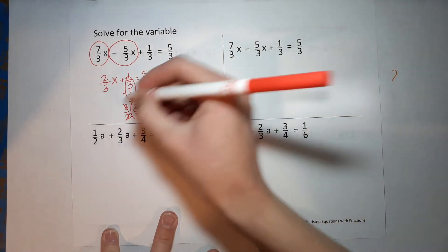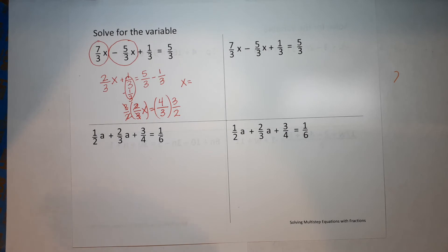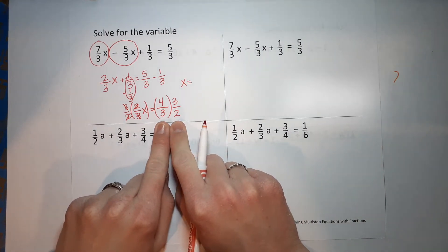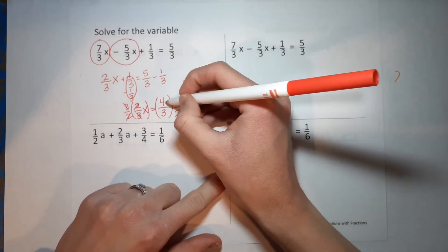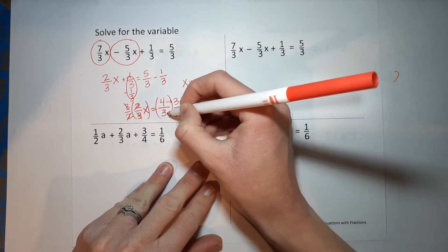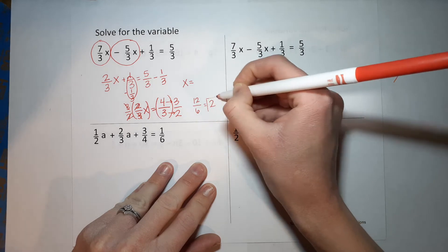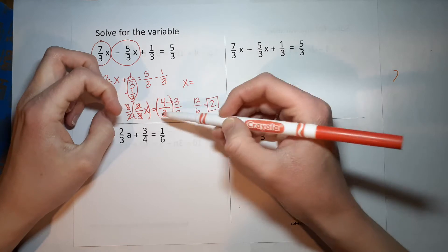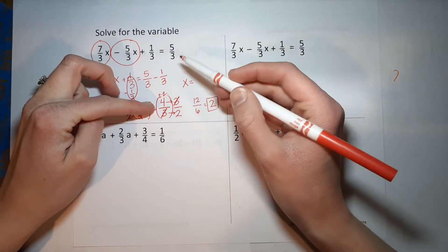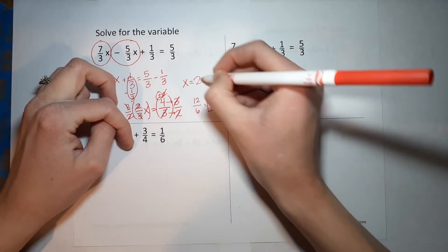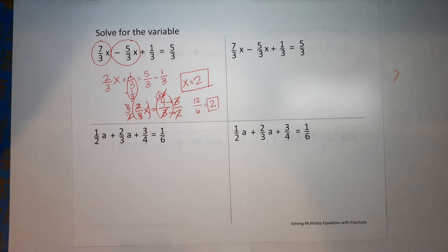I can't forget I have to multiply this side by 3/2 as well — whatever I multiply one side by, I have to multiply the other side by. So x equals 4/3 times 3/2. Multiplying fractions is much easier than adding or subtracting — you just multiply straight across: 4 times 3 is 12, and 3 times 2 is 6, which simplifies to 2. Or you can notice that 4 is 2 times 2, and that 2 and the 2 in the denominator cancel, leaving just 2. So x equals 2.